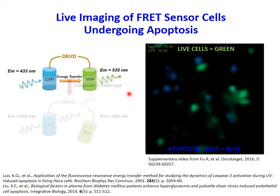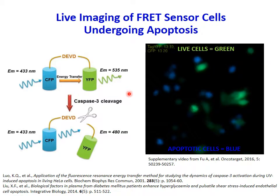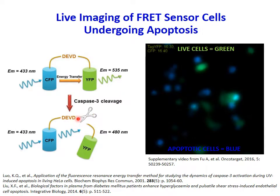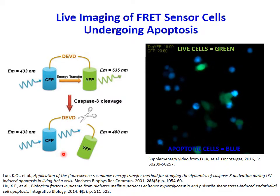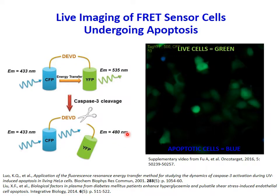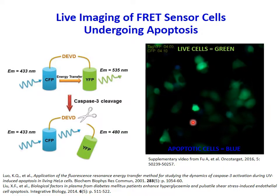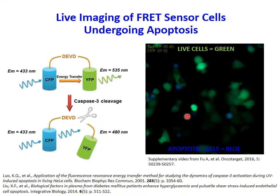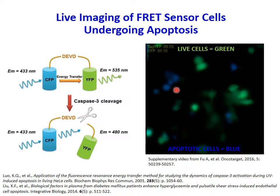However, when cells are undergoing apoptosis, caspase-3 is activated and cleaves the DEVD linker. The energy transfer or FRET effect is abolished, and apoptotic cells will appear blue as CFP emits a wavelength of 480 nanometers. On the right side, you can see cells appear green under normal conditions, but they will turn blue as they undergo apoptosis after exposure to UV irradiation.